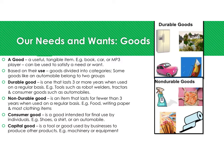A durable good is one that lasts three or more years when used on a regular basis, such as factories, tractors, and robot welders. A non-durable good is something that perishes and doesn't last more than three years. Food is very perishable, writing paper can be non-durable, and most clothing items don't last more than three years, so they are categorized as non-durable.